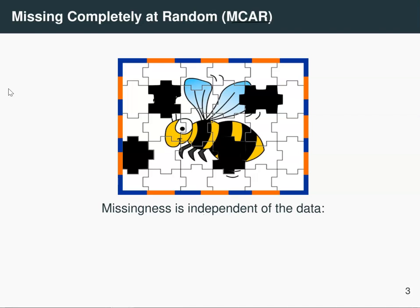On the first day, Mr. Pickles took off the puzzle pieces in a completely random way — he didn't choose them based on where the puzzle pieces were or what colors they contained. This is missing completely at random. What does it mean when the missing data mechanism is missing completely at random? It means that the missingness is independent of the data. Mathematically, the probability of ri given the data yi is simply the probability of ri, because it is completely independent of the data. Looking at the jigsaw puzzle, you're going to be losing some information, but you still have quite a good idea of the colors and the proportions of colors in the picture.